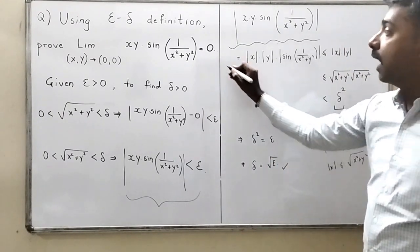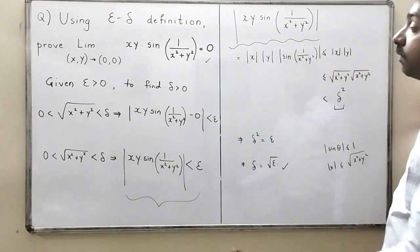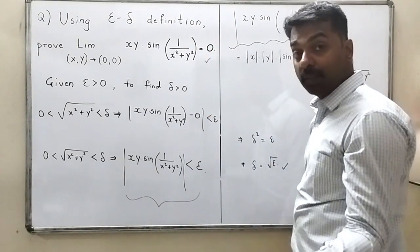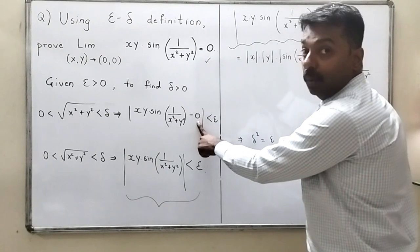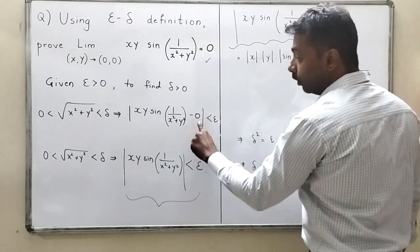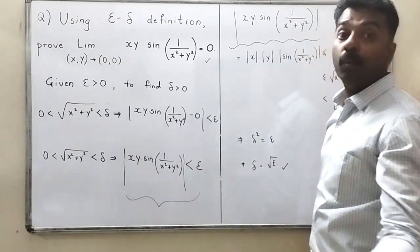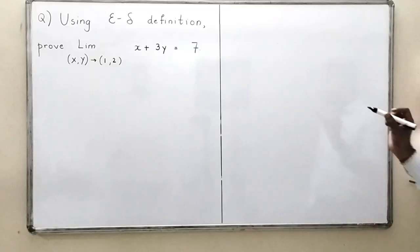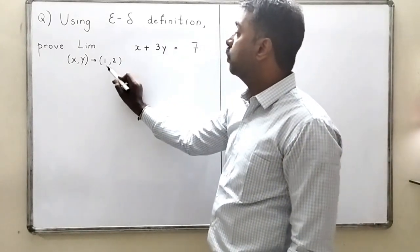Since |xy·sin(1/(x²+y²))| < delta² and it must be less than epsilon, we set delta² = epsilon, giving delta = √epsilon. Once delta = √epsilon is found, the limit equals 0 is proved. The next problem has a limit not equal to 0 — all previous problems had limit 0, but now we will handle the case where the limit is nonzero.